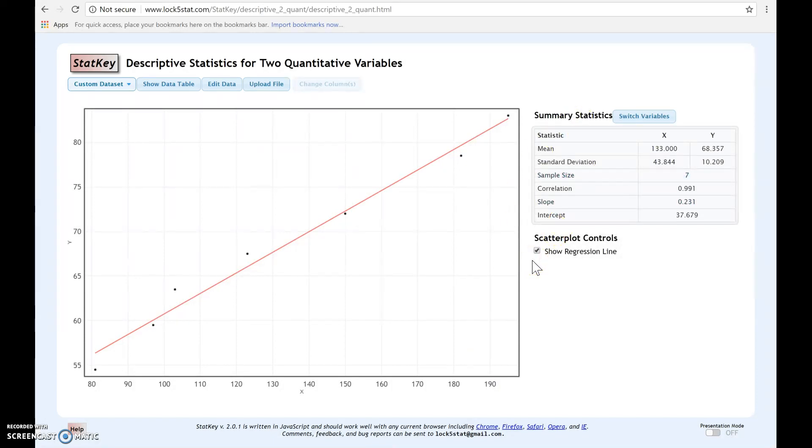Now, one thing to keep in mind if you're entering your own data, you want to make sure that you have entered the correct x and the correct y. So if you'll remember in this case, our explanatory was the chirps and our explanatory was the y.